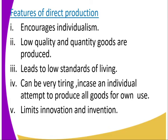Number two: raw quality and quantity goods are produced. When producing your own goods, you produce of any quality — you don't aim for high quality, you cannot spray or produce a huge amount, you cannot produce large quantities. So you are producing a small quantity of raw quality. This leads to low standards of living, since you don't earn any income, hence living at a low standard of living.